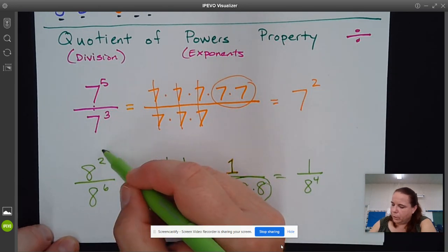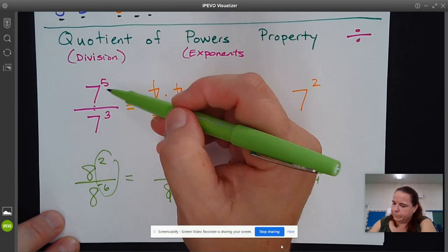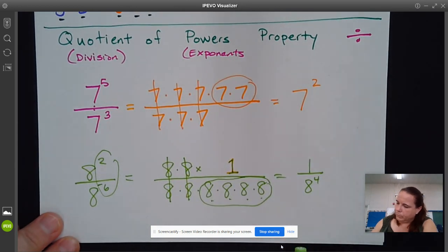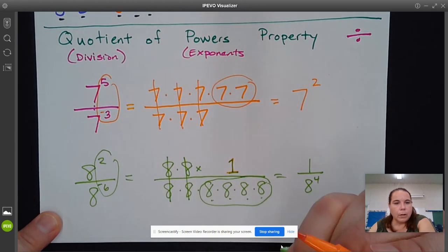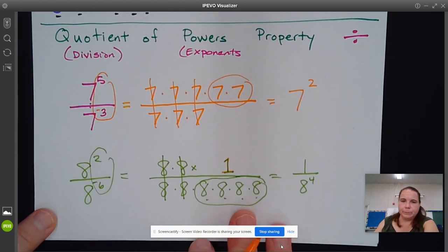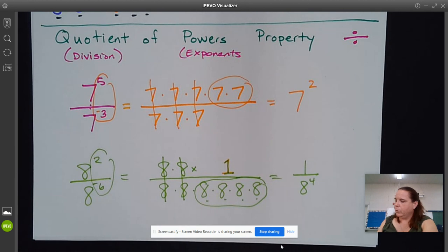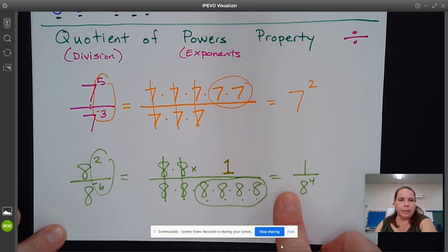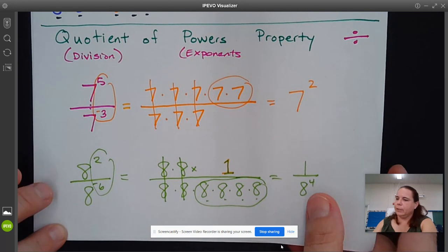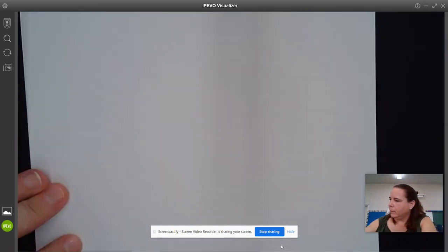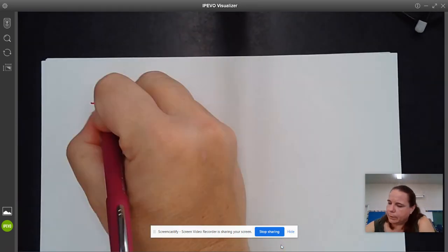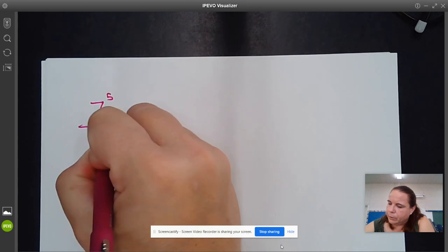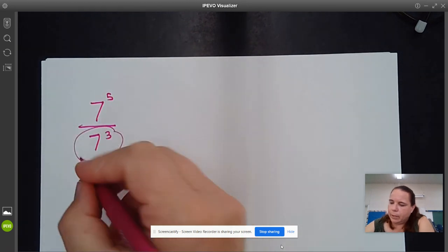And so what you're doing with these exponents is subtracting them. If you guys watched the Ed Puzzle yesterday, you would have seen they explained this a little bit differently. The understanding is that if you had 7^5 and 7^3, where 7^3 is in the denominator...